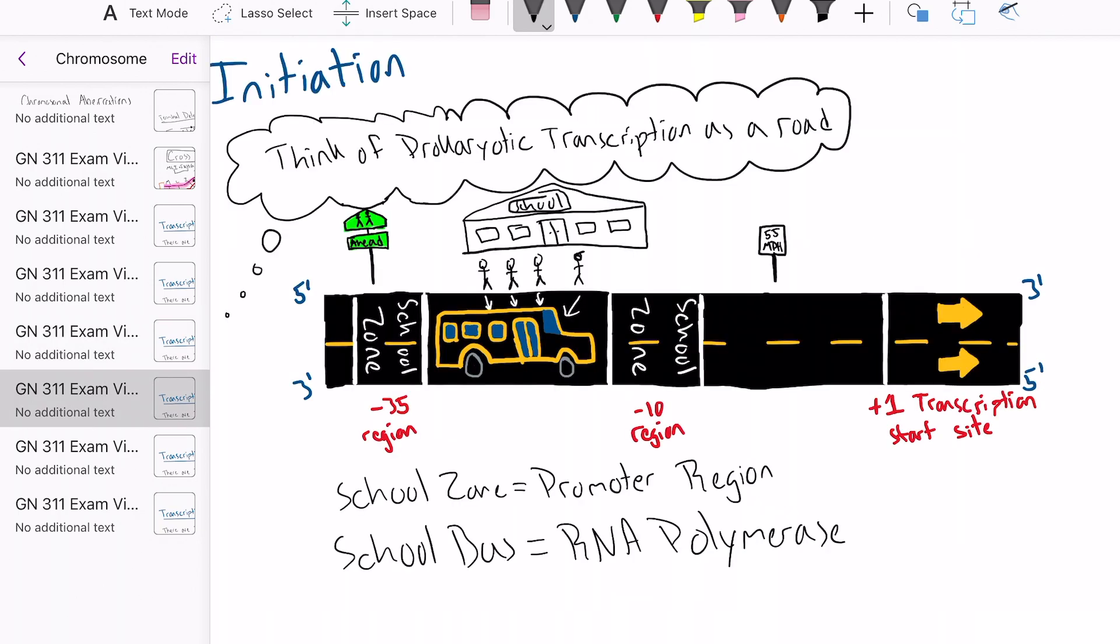So in this case, we will have this guy be our driver, this further right guy, and he will be our sigma factor. This is called a core enzyme. Without the sigma factor on the RNA polymerase, it is just a core enzyme.